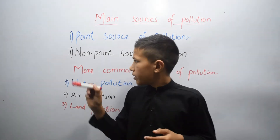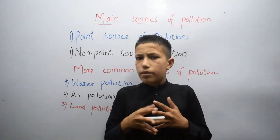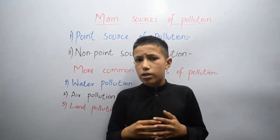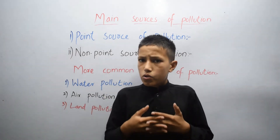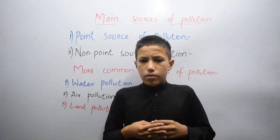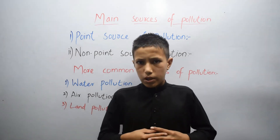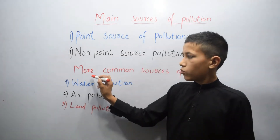Non-point source pollution is when pollutants come from many diffuse sources. Non-point source pollution is caused by rainfall or snowmelt moving over and through the ground.